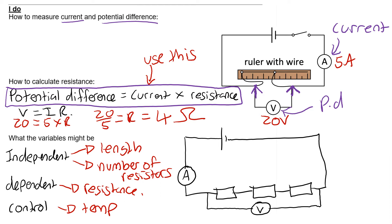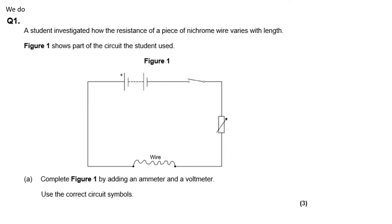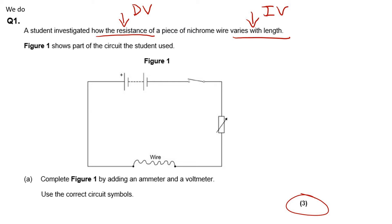Now let's look at a past paper question. A student investigated how the resistance of a piece of wire varies with length — so length is the independent variable and resistance is the dependent variable. The question asks us to complete a circuit diagram by adding an ammeter and a voltmeter. The ammeter goes in series anywhere on the loop, and the voltmeter goes in parallel. That's one mark for each symbol and one mark for correct placement — three easy marks.